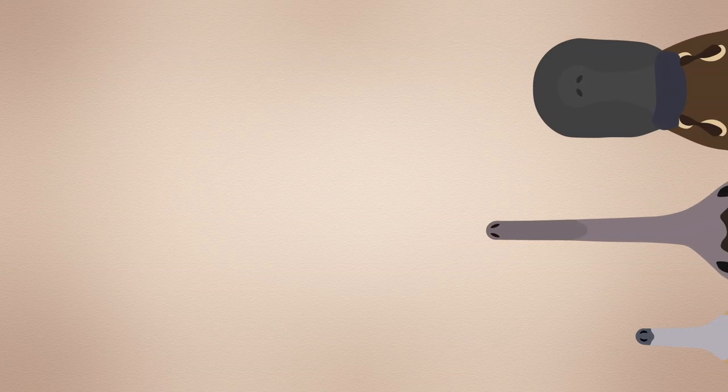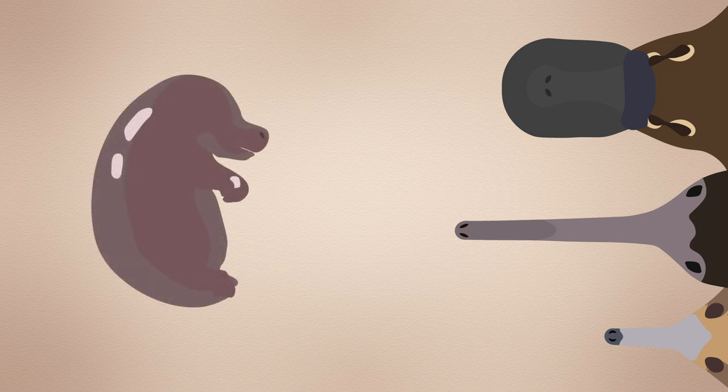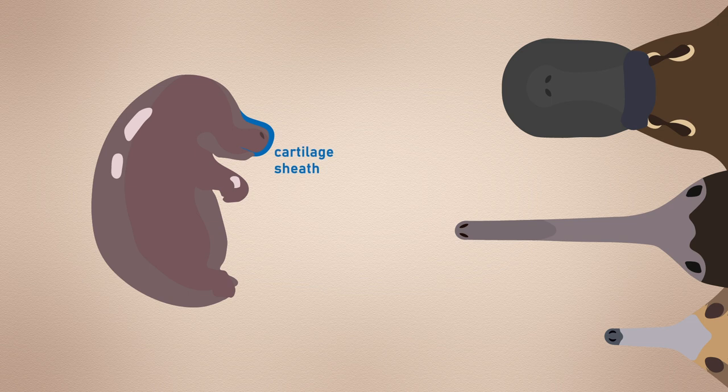Whilst their snout may not automatically resemble a platypus beak, as embryos it is sheathed in a cartilage not dissimilar to that found in platypuses, suggestive of a billed ancestry.